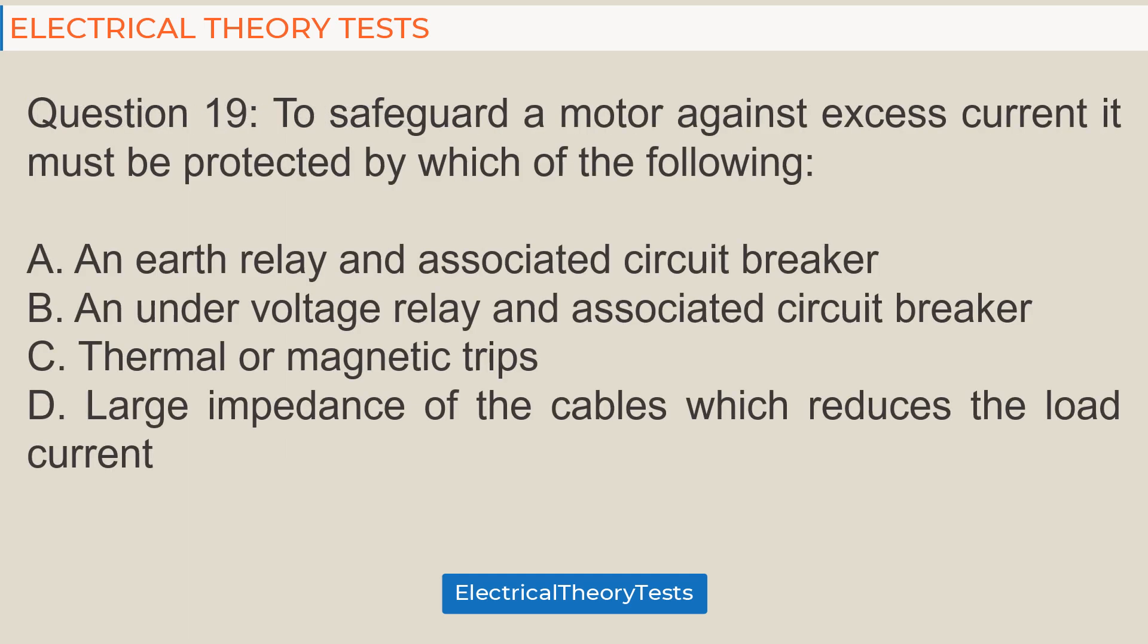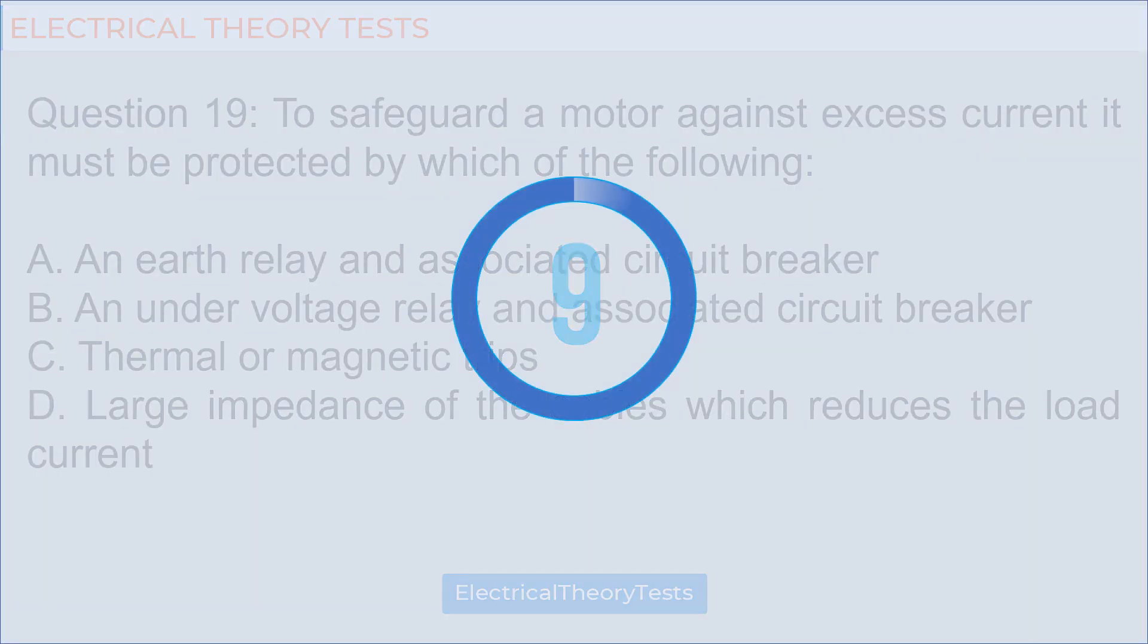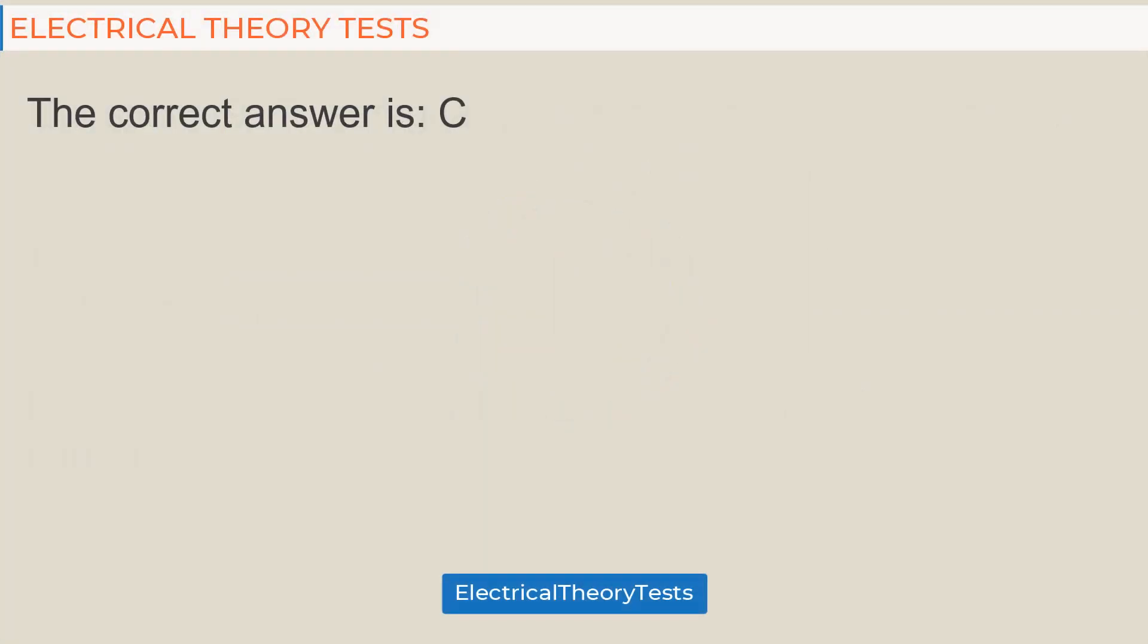Question 19: To safeguard a motor against excess current it must be protected by which of the following? A. an earth relay and associated circuit breaker, B. an undervoltage relay and associated circuit breaker, C. thermal or magnetic trips, D. large impedance of the cables which reduces the load current. The correct answer is C.